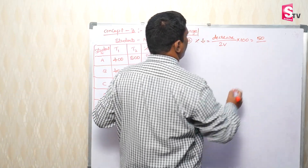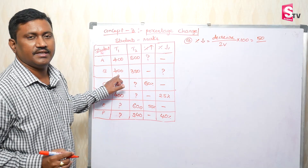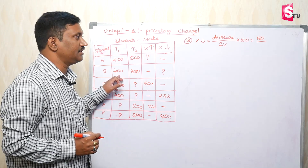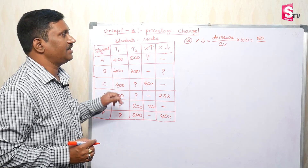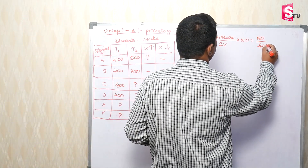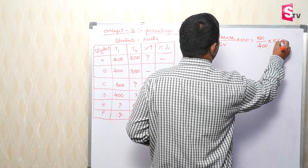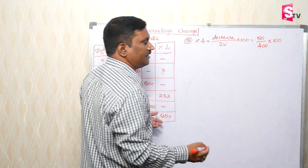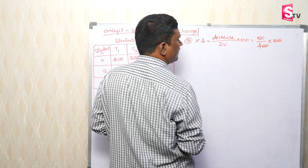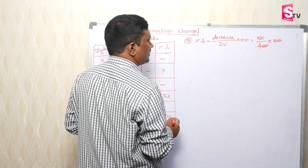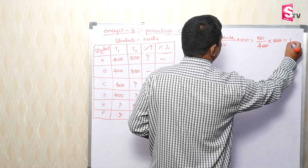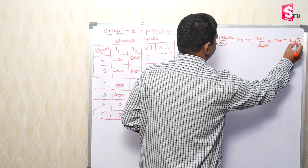So: 50 divided by 400 — 400 is the initial value — into 100. Every 400, 50 decrease, into 100. Cancel: 100 and 400 simplify; 50 by 4 gives 25 by 2, which is 12.5.